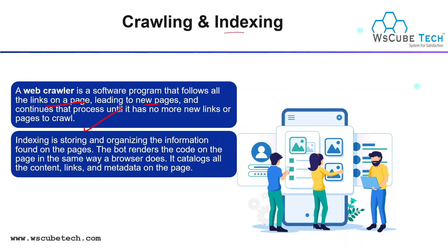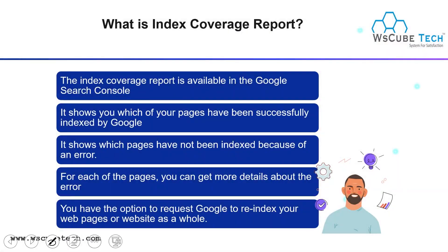In case of indexing, as the word suggests, indexing is storing and organizing the information found on the pages. The crawler renders the code or the pages in the same way a browser does. It catalogs all the content, links, and meta tags on the page. So this is your indexing.